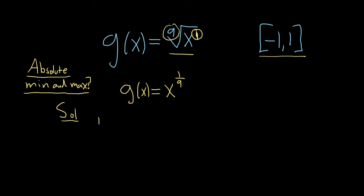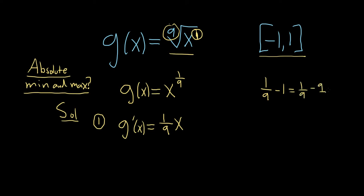Step one when you're finding absolute extrema is to find the critical numbers that are between negative 1 and 1. So take the derivative and set it equal to 0. G prime of x is equal to — bring down the 1 ninth using the power rule — so we have x, then we subtract 1. So 1 ninth minus 1 is really 1 ninth minus 9 ninths, which is negative 8 ninths. So we have x to the negative 8 ninths, and we set this equal to 0. We're looking for critical numbers.